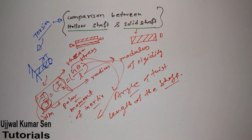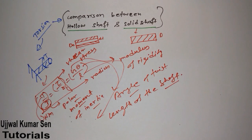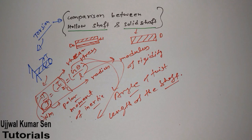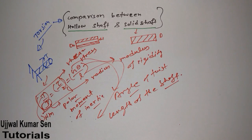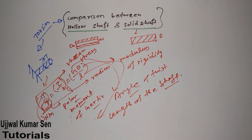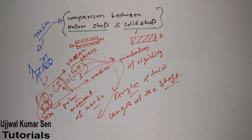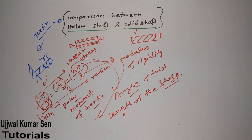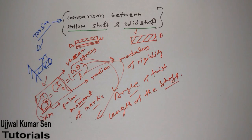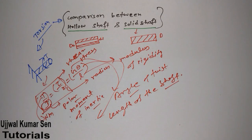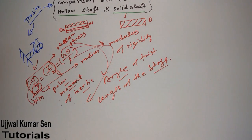The polar moment of inertia for hollow shaft and for solid shaft both have different formulas. Because the shaft is hollow, the moment of inertia will be different. And for solid shaft, the moment of inertia will also be different. Because of that, we can compare the torque or shear stress.